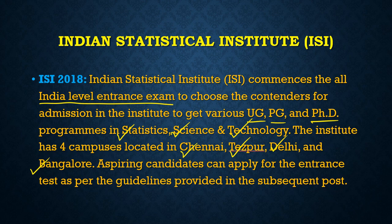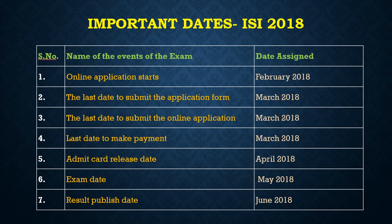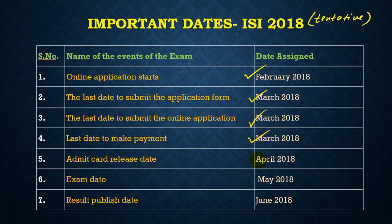Let's look at some dates. The dates for ISI 2018 are all tentative: the online application starts in February, the last day to submit the online application is in March, the last day to make the payment is also in March, the admit card will release around April, the exam will be in May, and results will be declared in June.